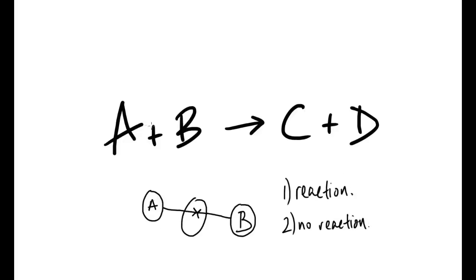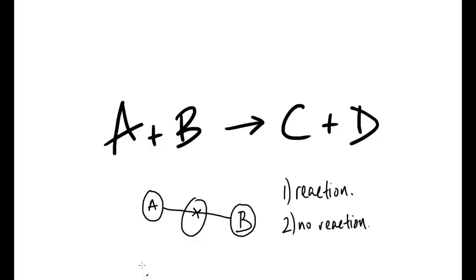In the first instance, A and B will come together, the reaction will take place, and C and D will be produced, of which A and B will no longer exist. In the second case of no reaction, A and B will just come together, bounce off each other, and there will be no reaction.